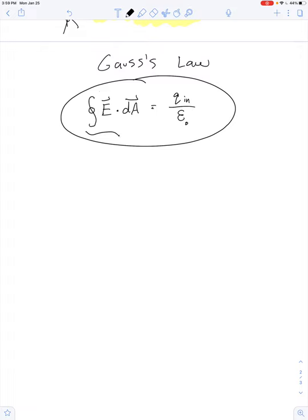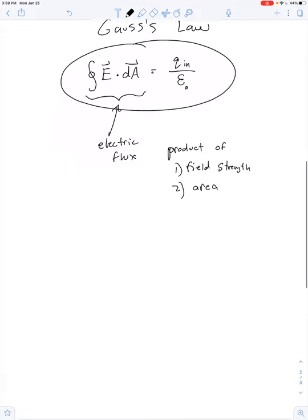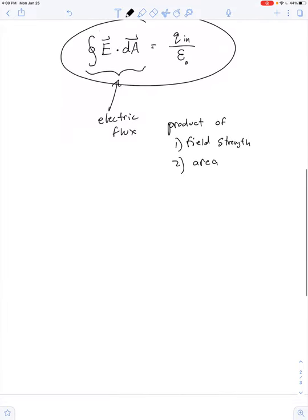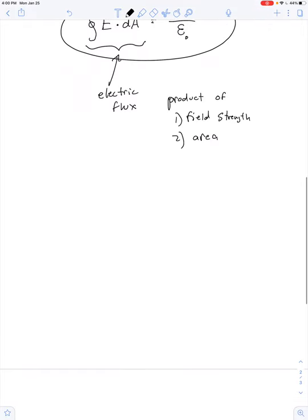This entire left side of the equation is actually a way to calculate something known as electric flux. Electric flux is exactly what it looks like. It's a product of two quantities. It's a product of field strength, electric field strength in this case, and area. There's such thing as magnetic flux as well, which is the product of magnetic field strength and area. So electric flux is found any time electric field lines puncture a surface area, so to speak.